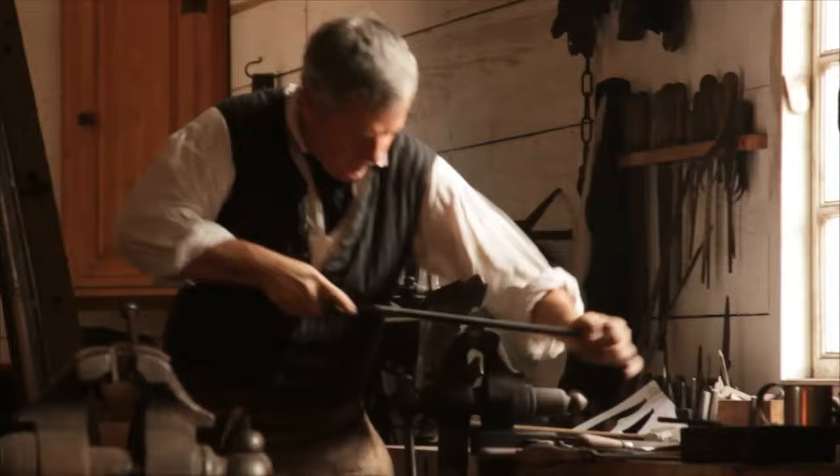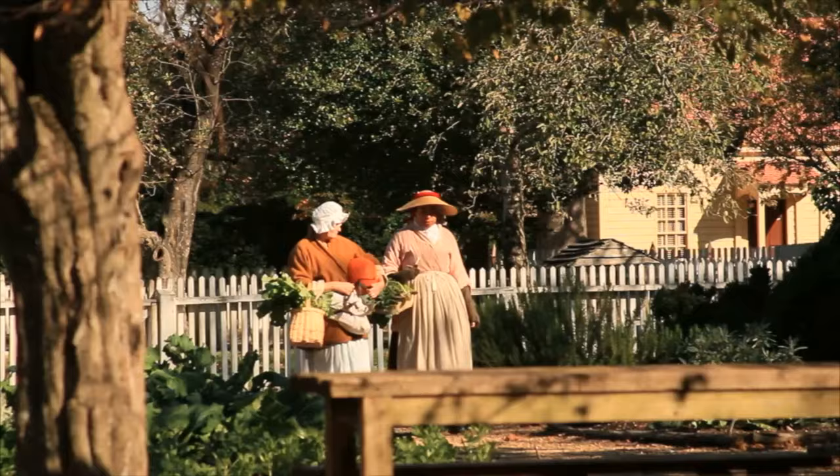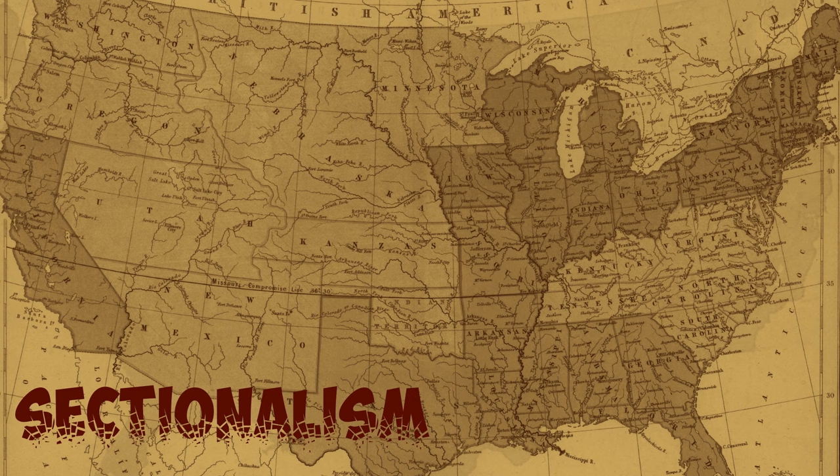Disagreements about slavery and government, as well as differences in economics and culture, led to an intense mutual dislike between the regions. This led to an era of sectionalism in America.